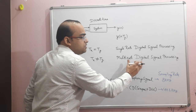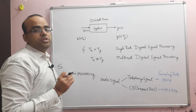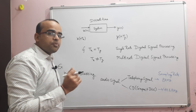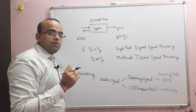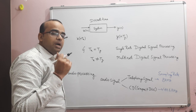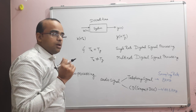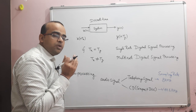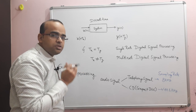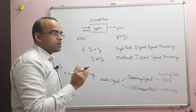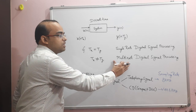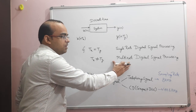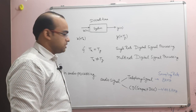In simple words, if the system is processing a signal which has multiple sampling rates, we will say it is a multi-rate system, and this type of signal processing is known as multi-rate digital signal processing.